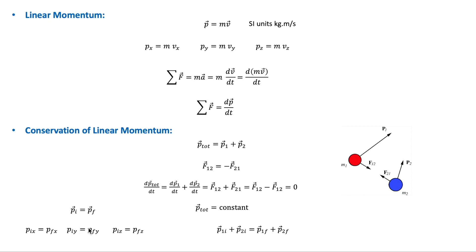In component form, the total linear momentum is conserved in each direction. In solving problems involving collisions, p-initial and p-final refer to the total momentum of the system immediately before and immediately after the collision. For a two-particle system, we may write the conservation equation accordingly. From the principle of invariance, the law of conservation of momentum is valid with respect to any inertial frame of reference. Like the law of conservation of energy, it is also valid in relativity and in quantum mechanics.